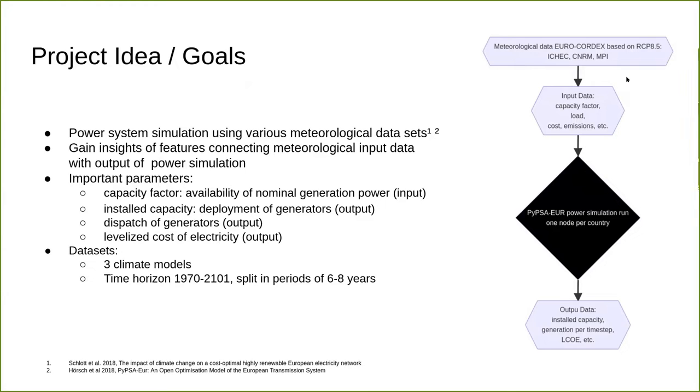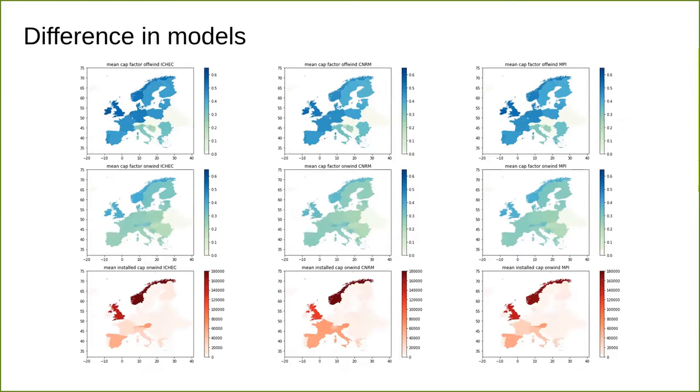The project idea was to make this bridge between meteorological data and output data from power system models. We used various meteorological datasets, mainly from CSET, which contains the Euro-CORDEX data. Three datasets from Euro-CORDEX were used to provide different capacity factors for renewables. We used PyPSA-Eur as a power system model in a one node per country setup to find output data including capacity factors, capacity decisions, dispatch, and levelized cost of electricity. In total we had three climate models spanning a time horizon from 1970 to 2001 in chunks of six to eight years.